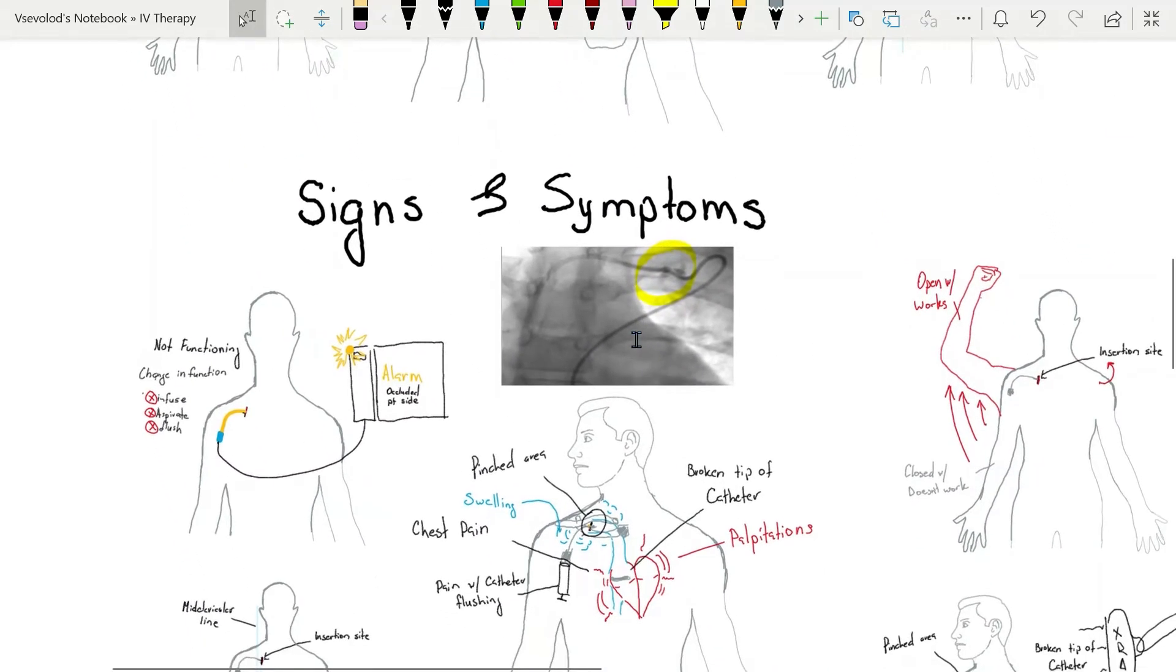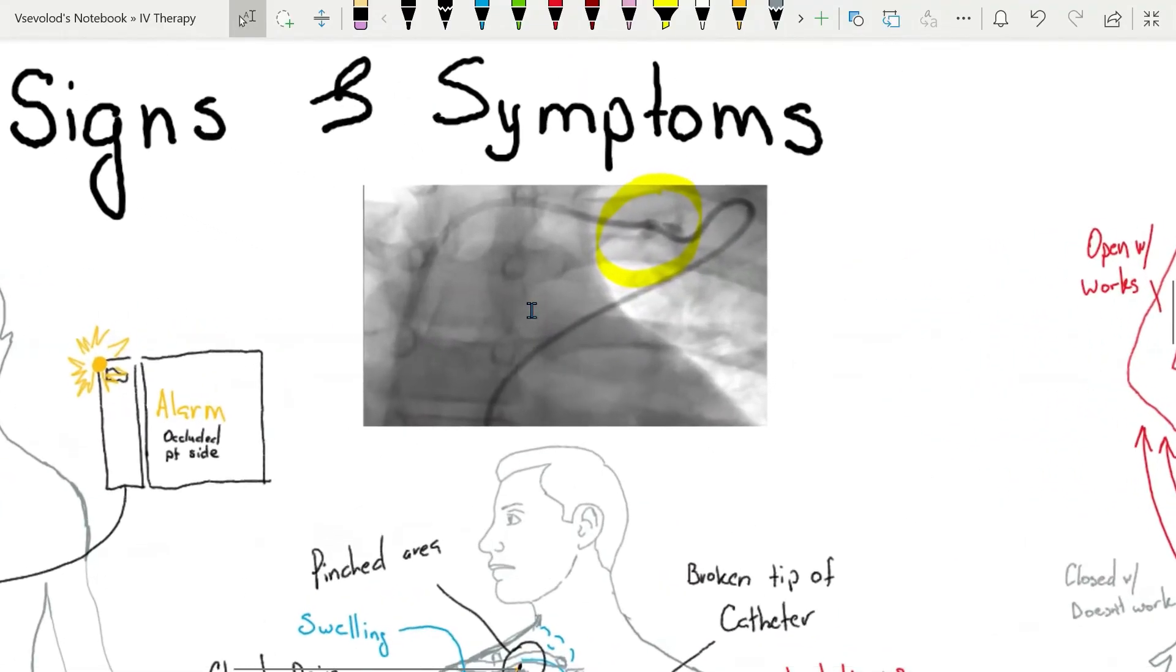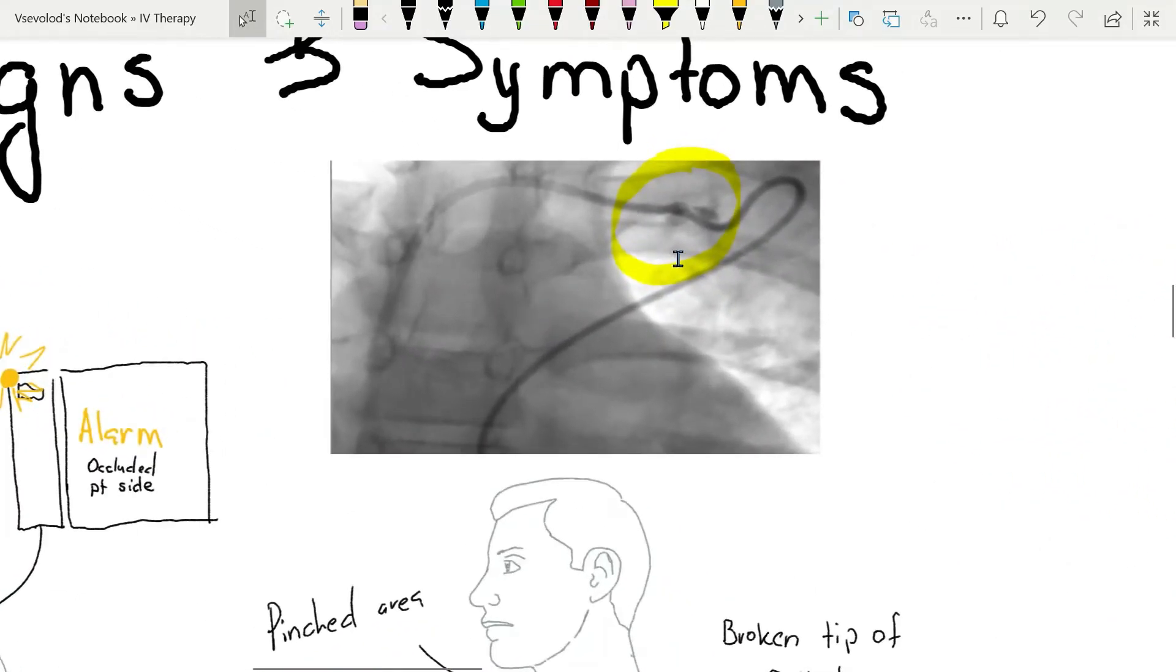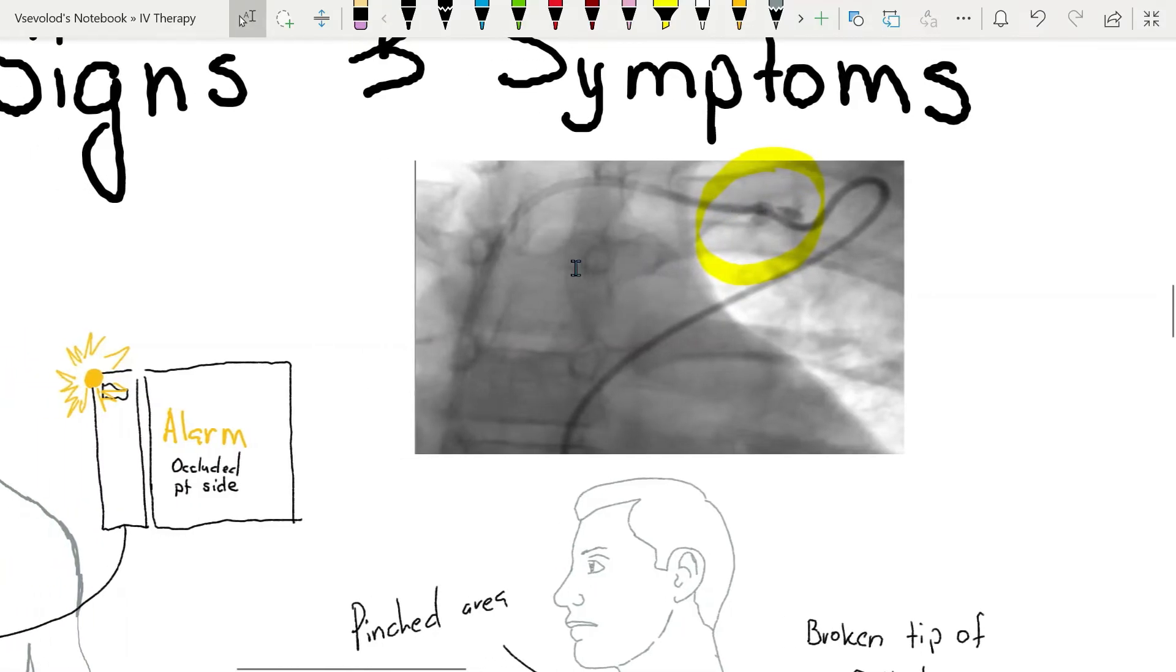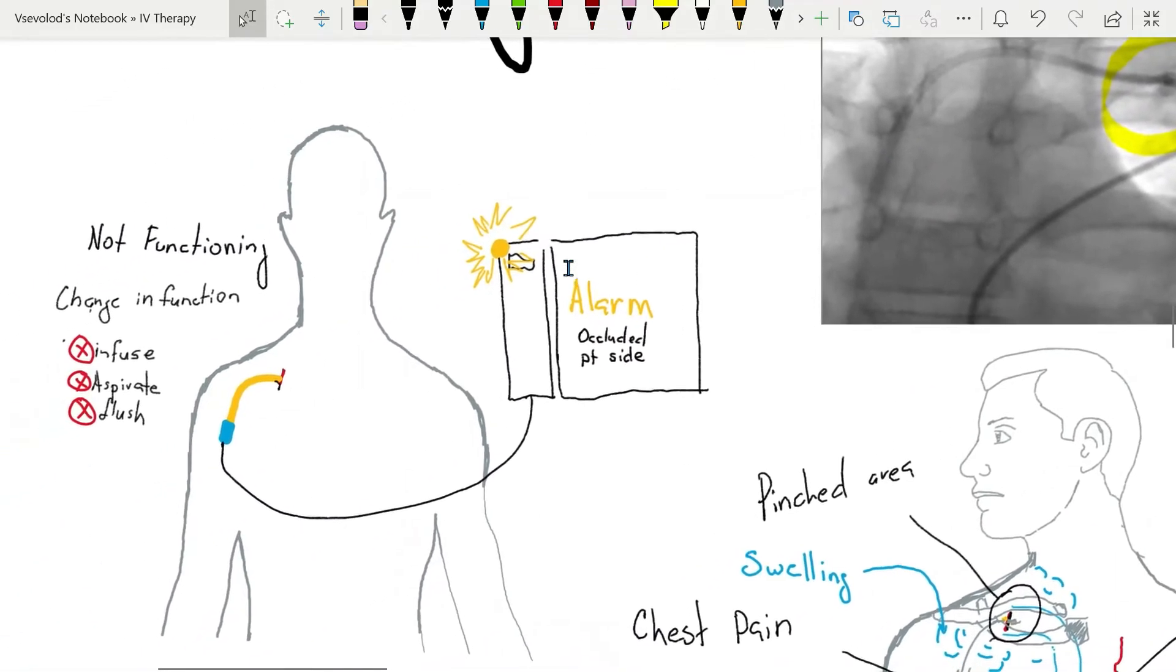Signs and symptoms of Pinchoff syndrome include: radiograph reveals a small indentation as the catheter passes between the clavicle and the first rib, which is consistent with Pinchoff sign.